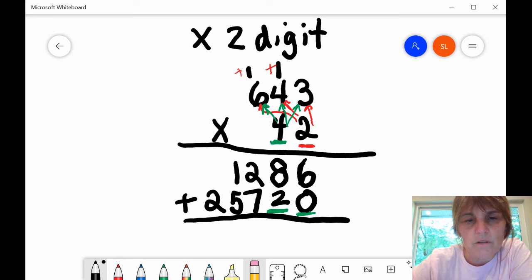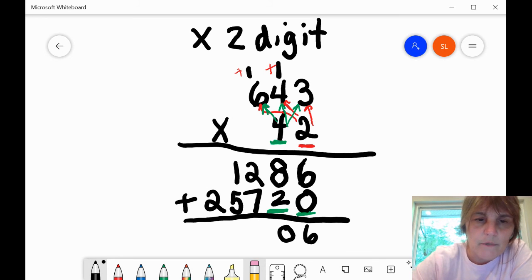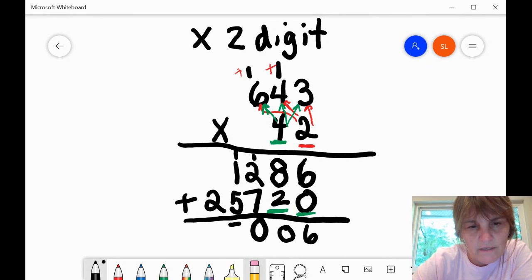So six plus zero is six. Eight plus two is ten. I'm going to carry a one. Seven plus two plus one is ten. The way that I think this is seven and one is three. Three and seven is ten. Make another zero. Carry the one. One plus one is two, plus five is seven.